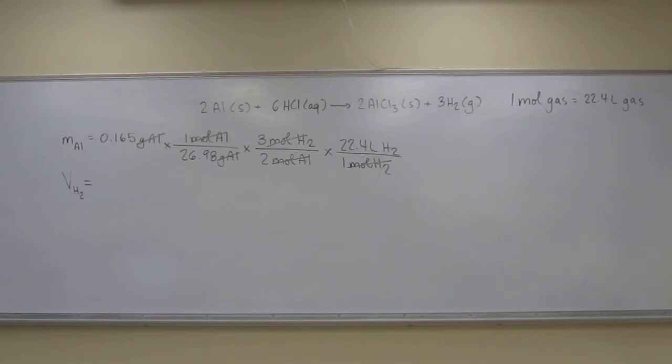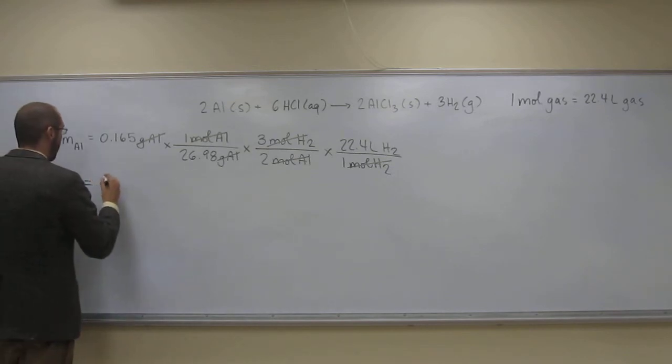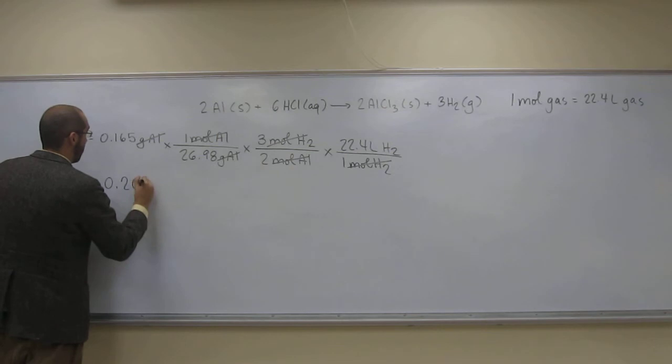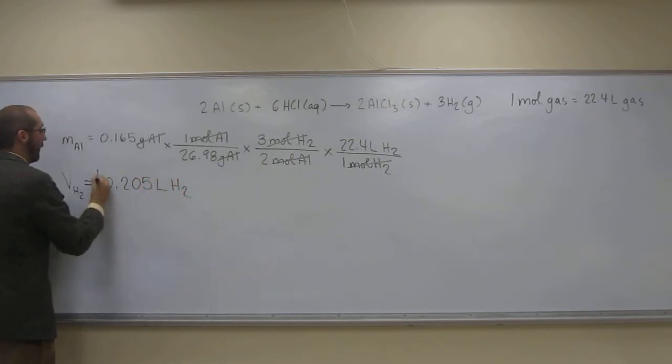So 0.165 times 3 times 22.4 divided by 26.98 divided by 2. And since they wanted it in liters, we're going to get 0.205 liters of hydrogen gas.